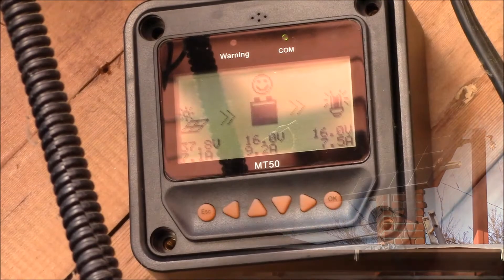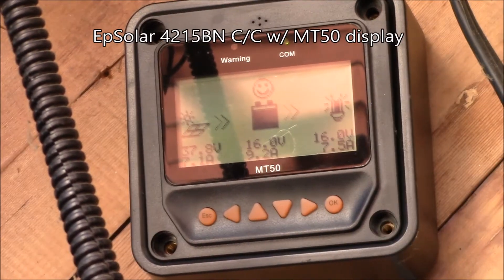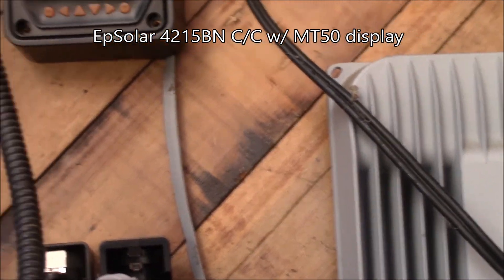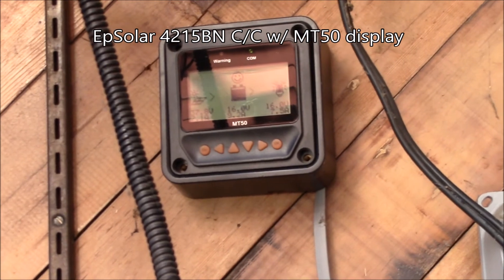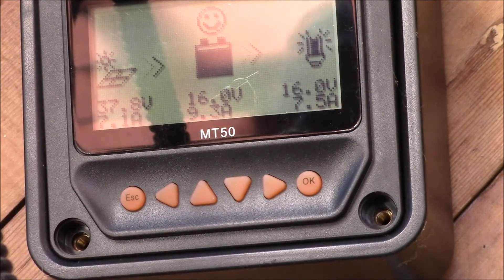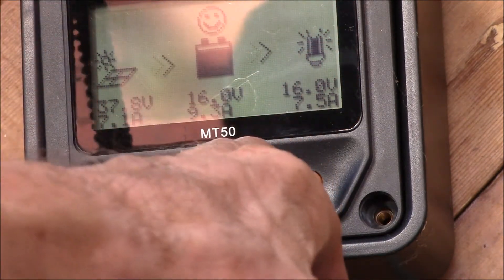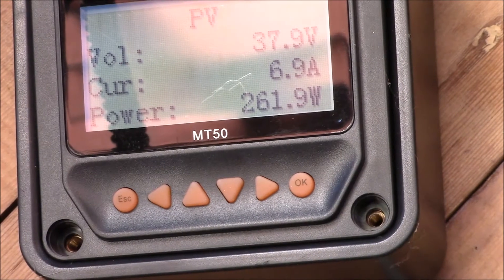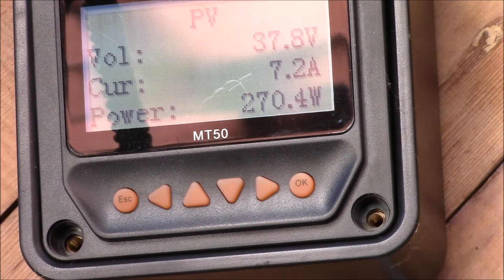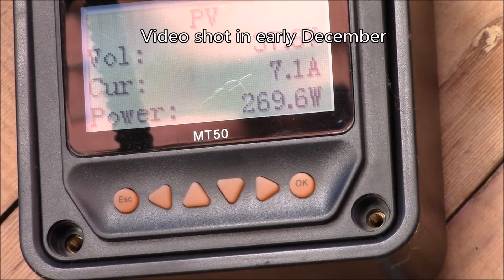There's the lithium charge controller. I got that one on the newer charge controller that has the lithium battery profile. We're getting 37.8 volts and 7 amps coming in, 261 watts, 270 watts. It's a little late in the afternoon, like 2:30, and pretty soon the sun's going to be going over the side of the house.